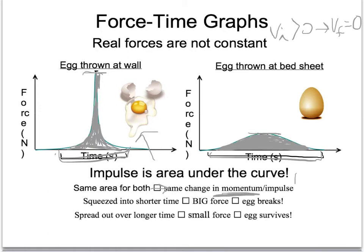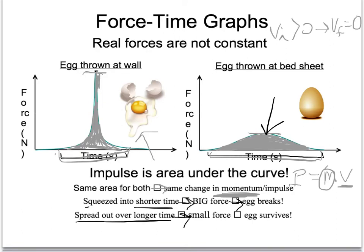Momentum — which we'll talk more about later — is simply mass times velocity, represented by p. You have the same change in momentum, so the same change in velocity, because it's the same egg both times. For the egg thrown at the wall, we squeeze its stopping into a short time, which means we need a big force, and therefore the egg breaks. When we throw the egg against the bedsheet, we spread its stopping out over a long time, which means we can use a small force, and the egg survives. The smaller your time, the bigger the force needed to stop something; the longer the time, the smaller the force can be.